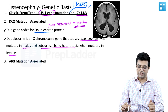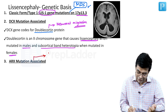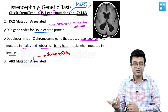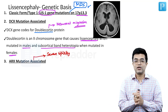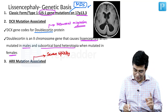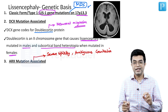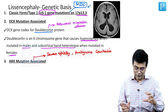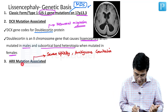The third variety is ARX mutation-associated lissencephaly. ARX is again an X-linked disorder. These patients will have severe epilepsy and missing or liquefied areas of brain tissue — liquefaction that happens in utero — resulting in a condition called hydranencephaly. They also have ambiguous genitalia. The ARX gene is associated with pseudo-hermaphroditism. So, a future MCQ about ambiguous genitalia with lissencephaly — the answer will be ARX gene mutation.